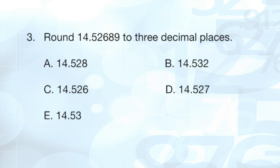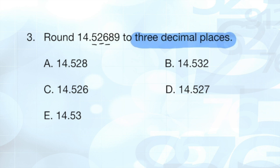Question three. Round 14.52689 to three decimal places. So we want to go to three decimal places here. One, two, three. I'm going to be rounding to that place value.